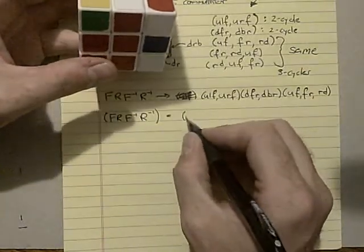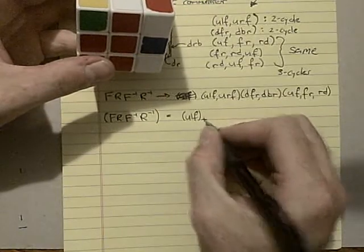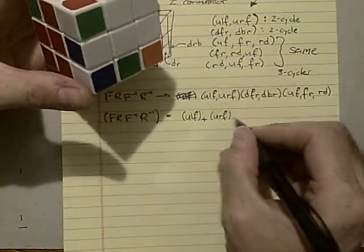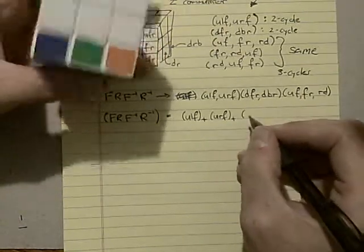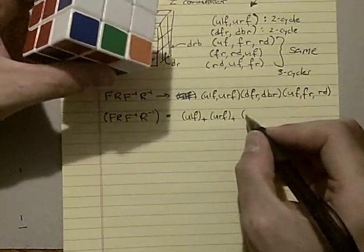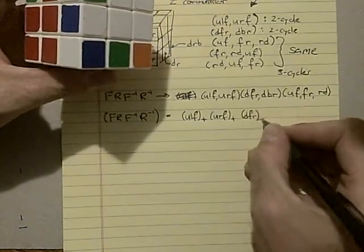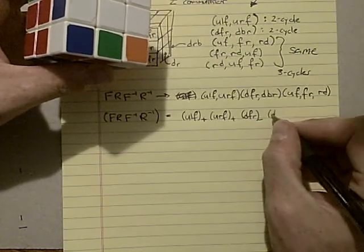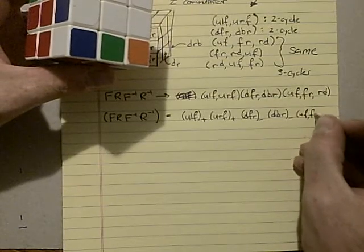So up, left, front, that is a clockwise twist. Up, right, front, that's a clockwise twist. So these other ones are going to be counterclockwise. So down, front, right, counterclockwise. And then down, back, right, counterclockwise. And then again, the same cycle. It doesn't matter how I write it.